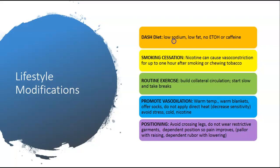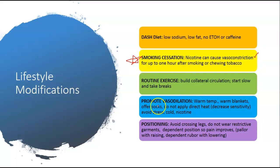Modifications: a balanced diet, low sodium, low fat, no alcohol or caffeine, stop smoking. This is going to be a major trend across all of our cardiac issues. Routine exercise — minimum of three times a week, start slow and take breaks. Promote vasodilation with warm temperatures, because if somebody has a blockage the last thing you want is vasoconstriction. That's why smoking cessation is important. Suggest warm temps, warm blankets, offer socks. Do not apply direct heat, because some patients may have decreased sensitivity. Try to avoid stress, cold, and nicotine.